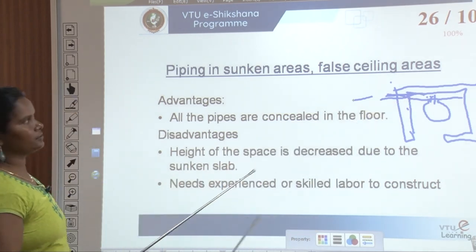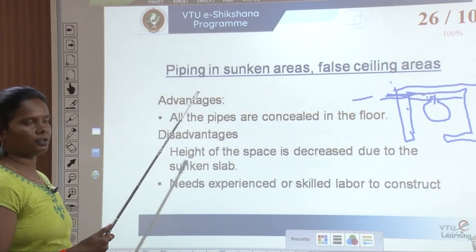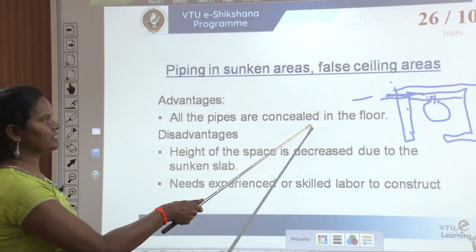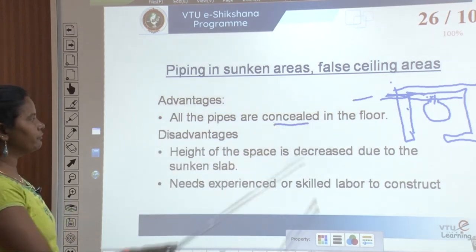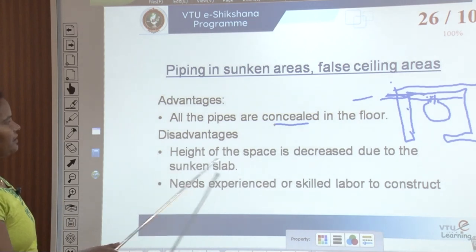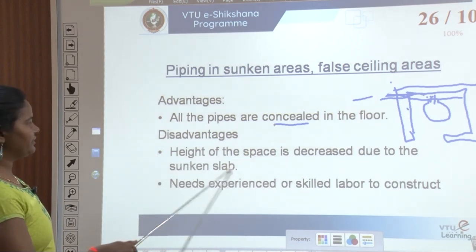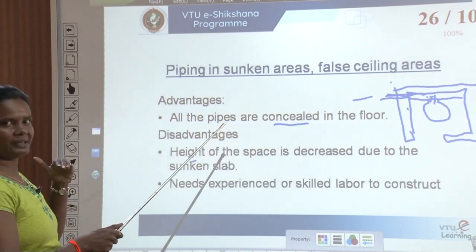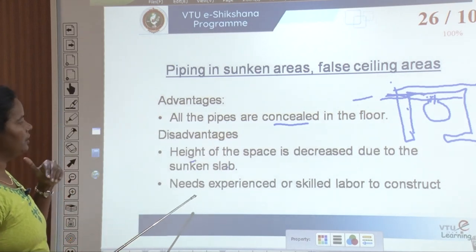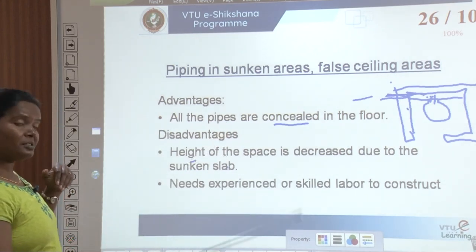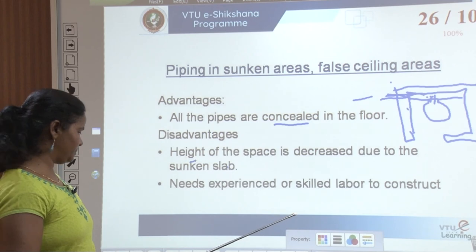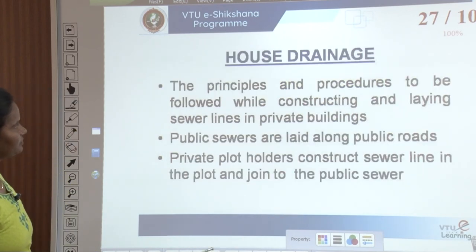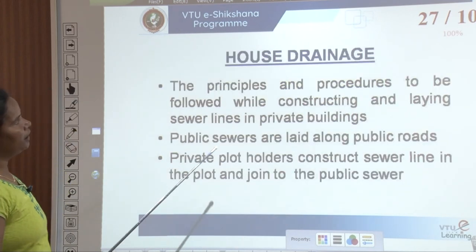There are different ways of doing piping for toilets — all aimed at concealing the pipes. When using sunken slab, the inner space height is reduced. Sunken slab requires experienced or skilled labour. Nowadays, a ledged wall is also used: a wall placed in front of the actual wall through which all pipes are taken and then connected outside, without piercing the main wall.